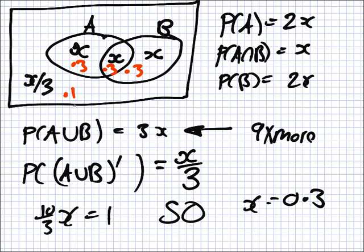Why did we make the outside 9 times less rather than writing 9x? Because the probability of A or B is already fixed as 3x from the Venn diagram — we can't now change it to 9x. What you could have done, David, is start by calling the outside 9x, but then that would change what we write in the intersection.